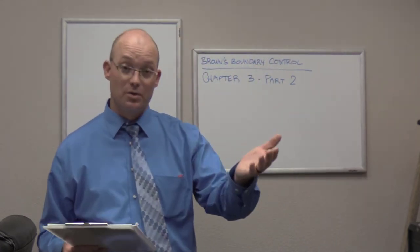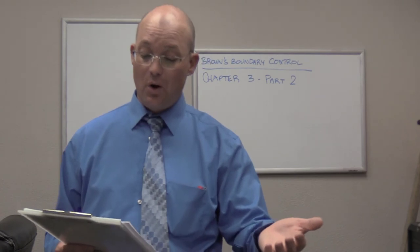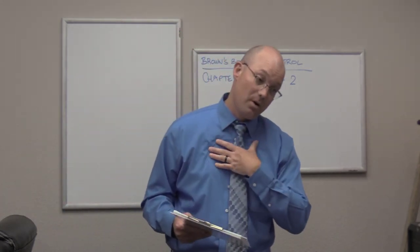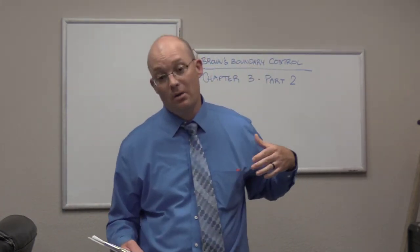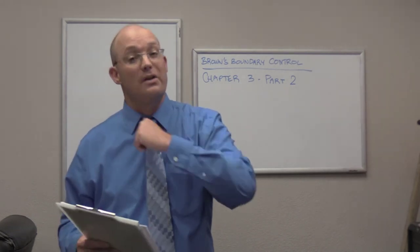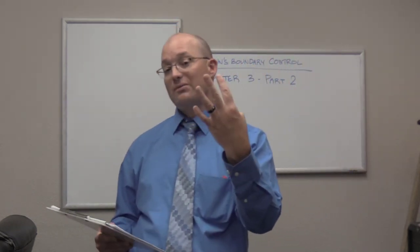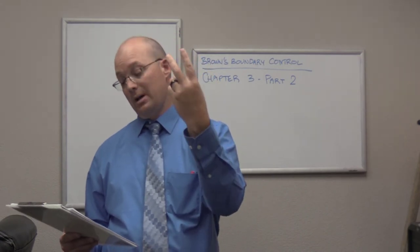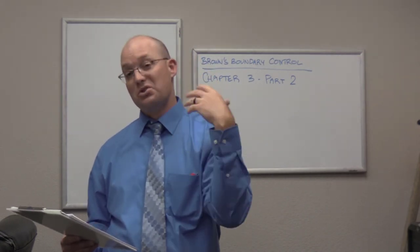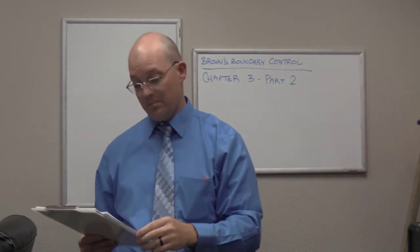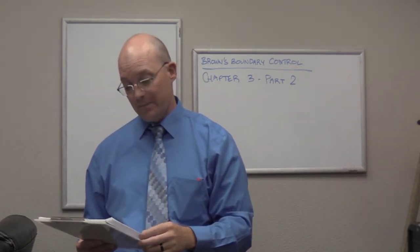He also mentions that elevation contours can be a controlling call in a land description. I have had that before in my practice on more than one occasion where a land description followed an elevation contour. They can be tricky. He talks about the four main parts of a land description. They've got a caption, a body, qualifying clauses which takes stuff away, and augmenting clauses which add stuff to the main parcel that's being transferred.